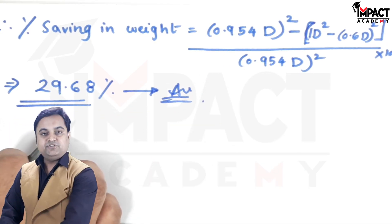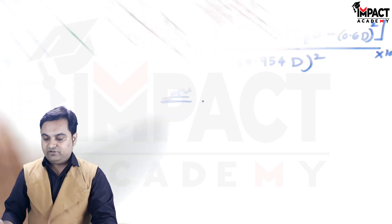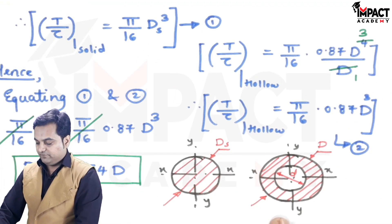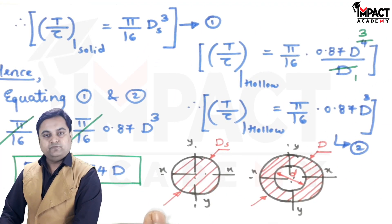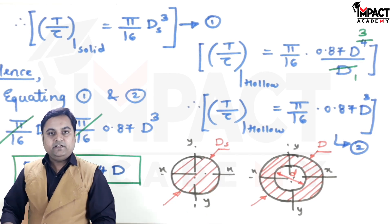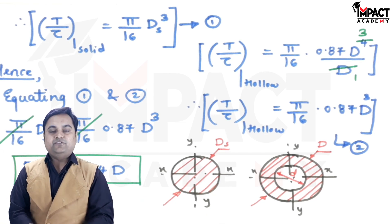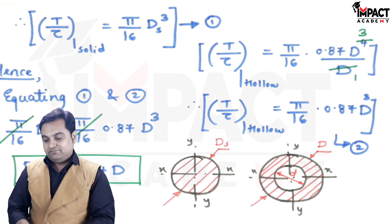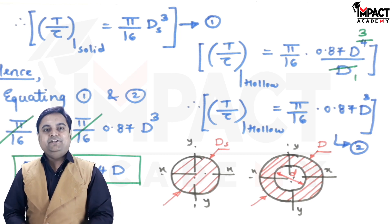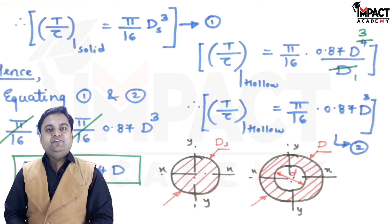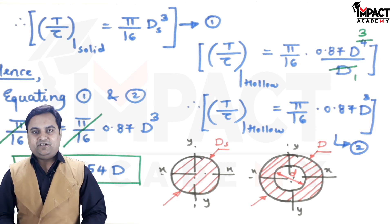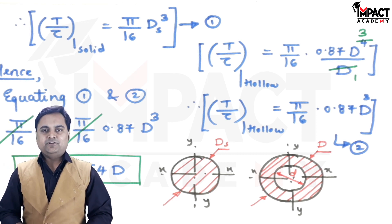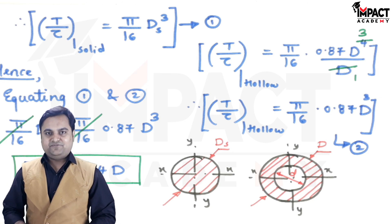The percentage reduction in weight is 29.68%. This means that by using a hollow shaft in place of the solid shaft, we achieve a total weight reduction of 29.68%. If you find the videos helpful, please like, share, comment, and subscribe to the channel.